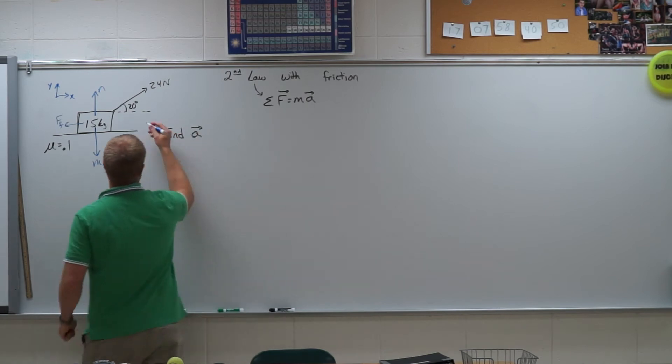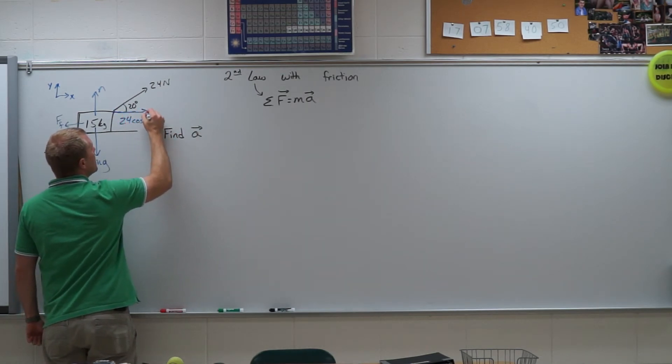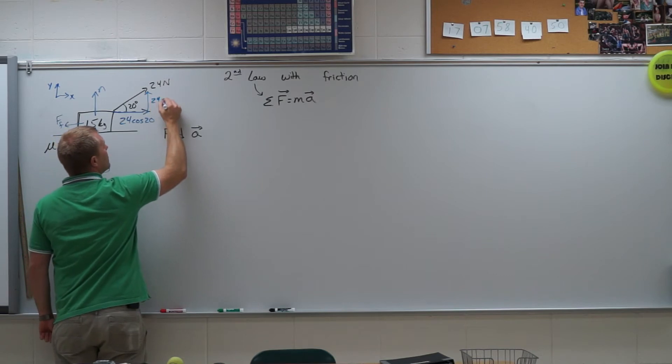Alright, so let's go ahead and resolve that into components. So I have 24 cosine of 20 and 24 sine of 20.